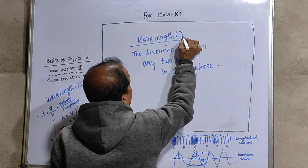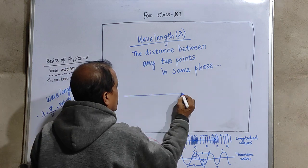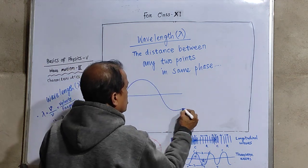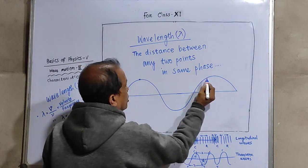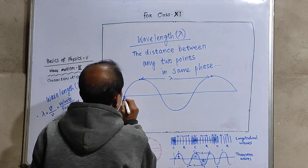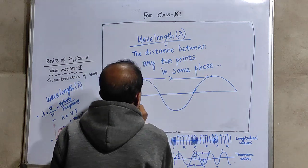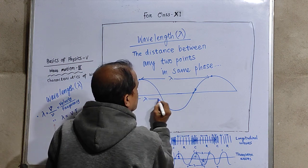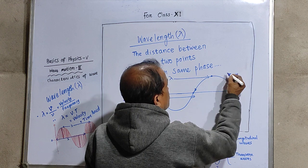This is symbolized by the Greek letter lambda and for a transverse wave going like this, you can see this position and this position are similar, so this length will be lambda. This position going up is again coming here, so this distance is also lambda. It is measured in meters.